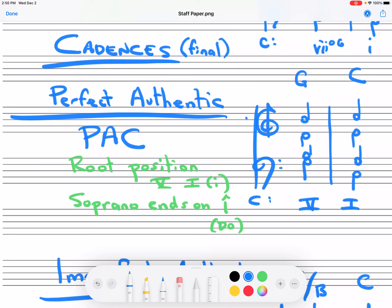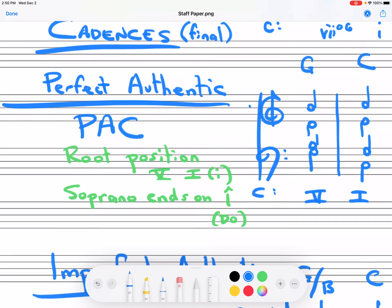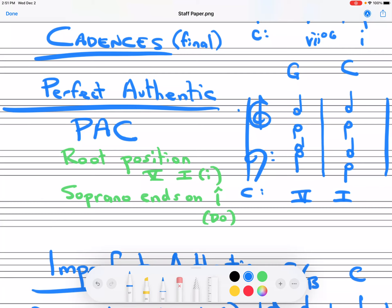I'm going to introduce these cadences from the strongest to the weakest. So the very first one is the Perfect Authentic Cadence. A Perfect Authentic Cadence is a root position 5-1 chord in which the soprano ends on I, so it ends on Do. And this is the one I just played.